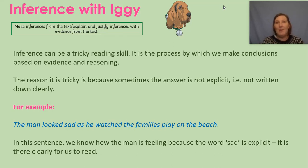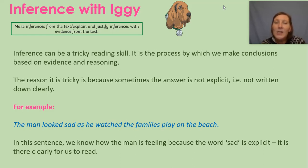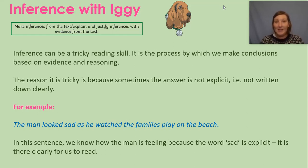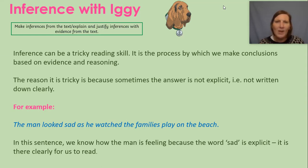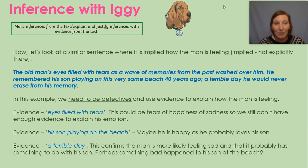For example: 'The man looks sad as he watched the families play on the beach.' In this sentence, we know how the man is feeling because the word 'sad' is explicit — we can retrieve that from the text and it's clear for us to read. But why is he sad? What's the reasoning? Let's find out.